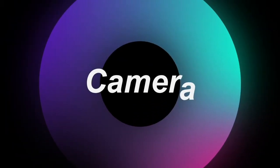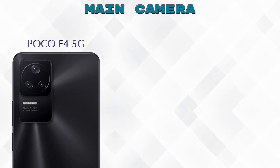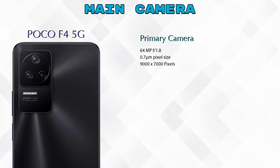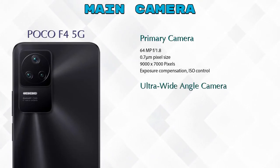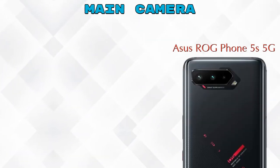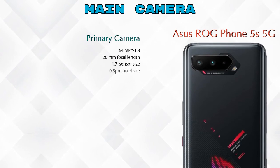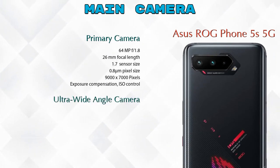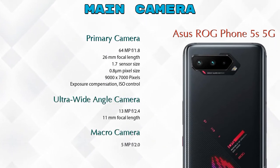Let's see the detail about our favorite feature — the camera. First, let's talk about the rear camera. The F4 5G has three cameras: a primary camera, an ultra-wide angle camera, and a macro camera. The ROG Phone 5s 5G also has three cameras: a primary camera, an ultra-wide angle camera, and a macro camera.